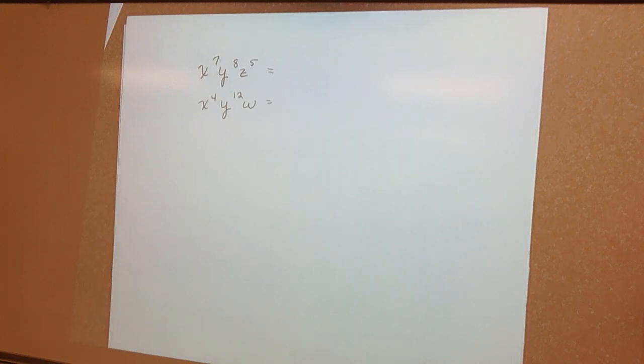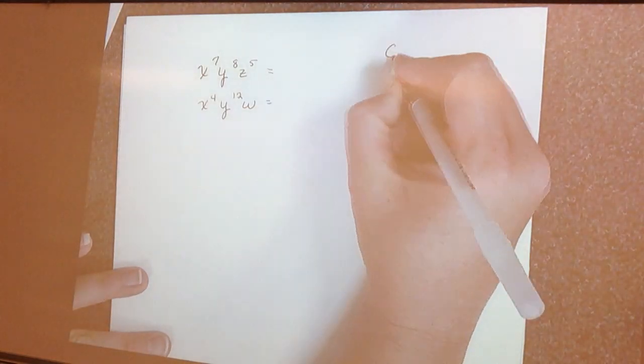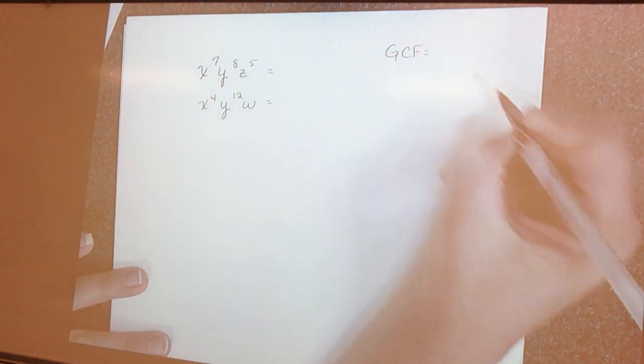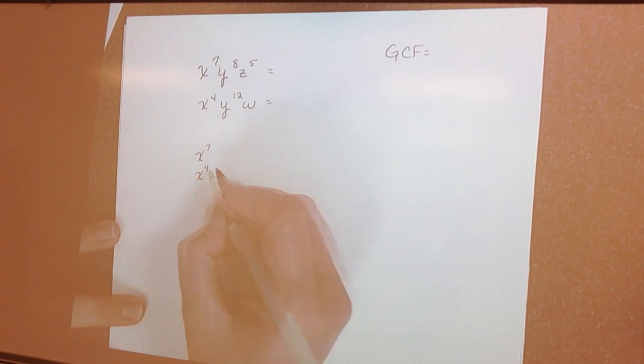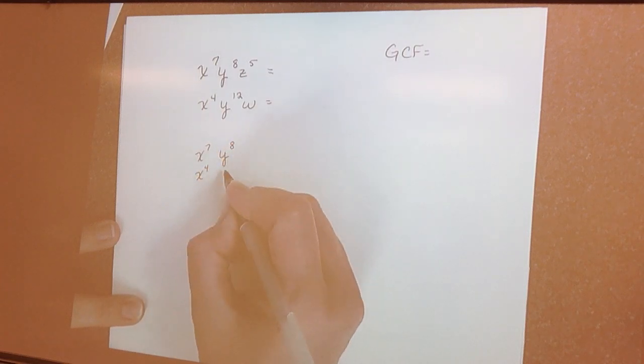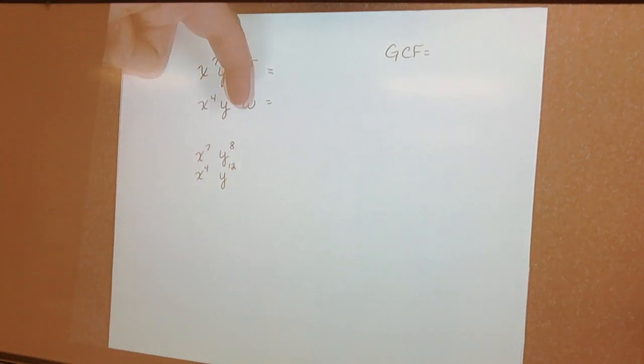So I'm going to look at what they have in common to find the GCF. What do they have in common? They have X to the 7th and X to the 4th, and they have the base Y in common. This one has a Z, this one has a W that's not in common.